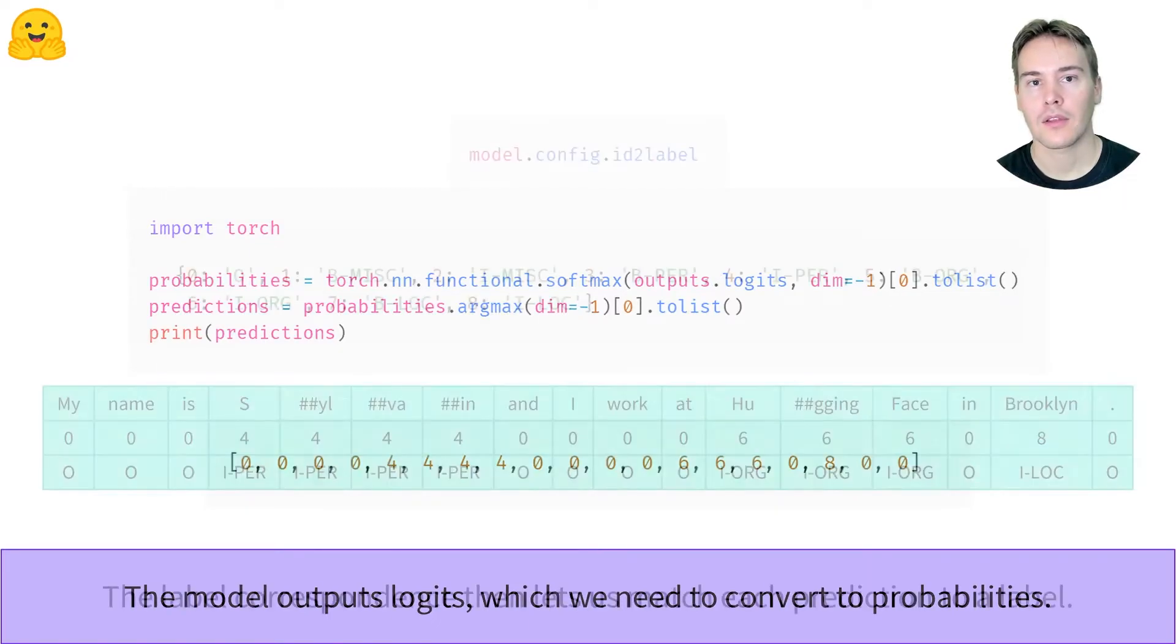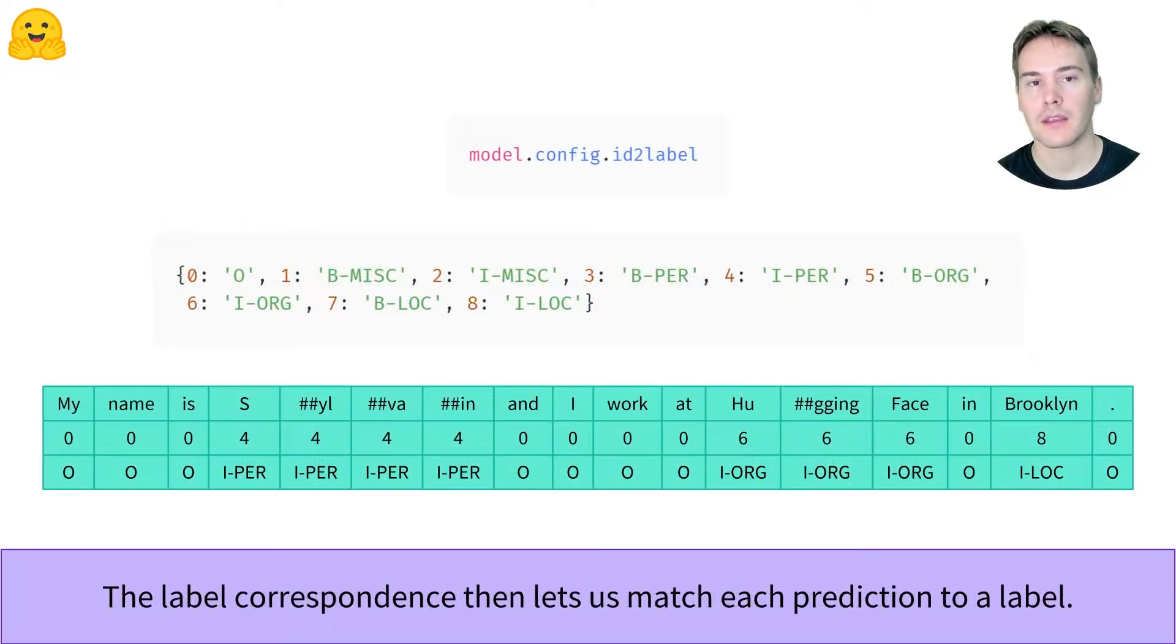The model config contains the label mapping in its id2label field. Using it, we can map every token to its corresponding label. The label O corresponds to no entity, which is why we didn't see it in our results in the first slide. On top of the label and the probability, those results included the start and end character in the sentence.